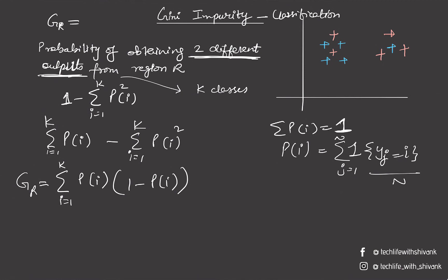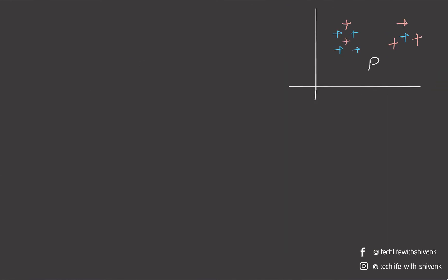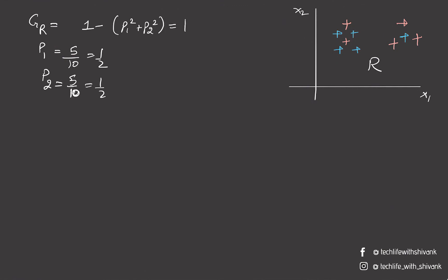Let's calculate the Gini coefficient for a given example. Say this is our complete region R and we have not made any split so far in 2D space. Probability of class 1 (the blue class) is 5 by 10 = 1/2, and probability of class 2 (red) is also 1/2. So Gini impurity = 1 minus (1/4 + 1/4) = 1 minus 1/2 = 1/2. This is the Gini impurity before the split. Note: please don't confuse Gini coefficient with Gini impurity — they are very different concepts.